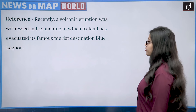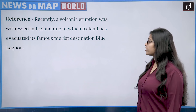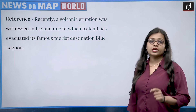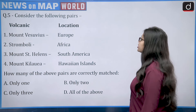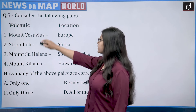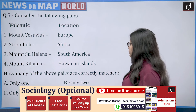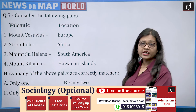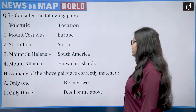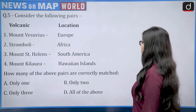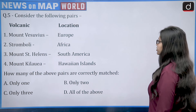The next reference is that a volcanic eruption in Iceland forced the evacuation of its famous tourist destination, the Blue Lagoon. This brings volcanoes into the news. The question asks: how many of the following pairs are correctly matched — Mount Vesuvius (Europe), Stromboli (Africa), Mount St. Helens (South America), and Mount Kilauea (Hawaiian Islands)?